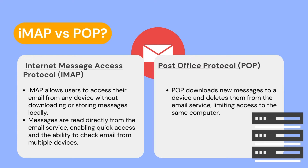POP works by contacting your email service and downloading all of your new messages. Once they're downloaded onto your PC, they are deleted from the email service, meaning the email can only be accessed from that same computer. IMAP is the recommended method when you need to check your emails from several different devices such as phones, laptops, and tablets. Since we just want to retrieve emails without completely downloading them from our mail server and would like to check emails from different devices, we will use IMAP.